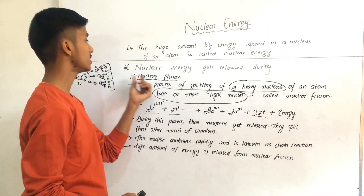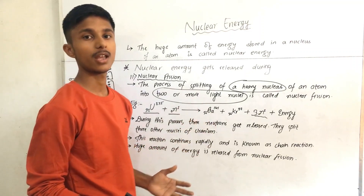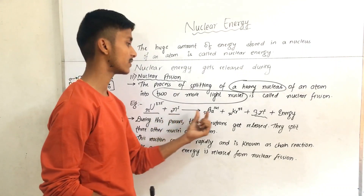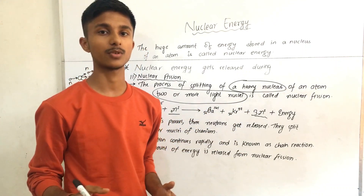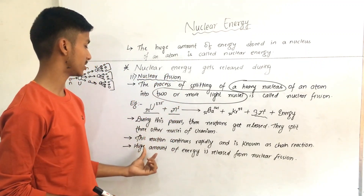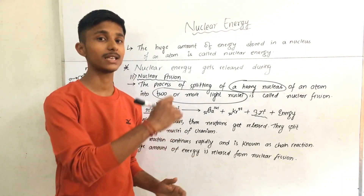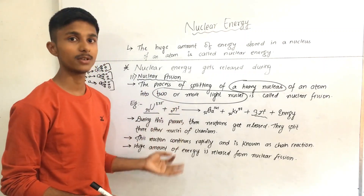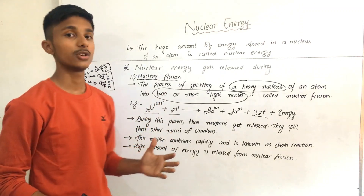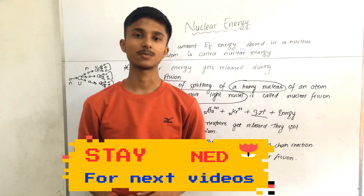So this is all about nuclear fission, and the atom bomb is an example of nuclear fission — nuclear fission reaction takes place in the atom bomb. We can notice the differences between nuclear fusion and nuclear fission from the details provided, and you can write them in table form. In this video, only this much — stay tuned for the next video.